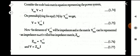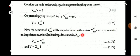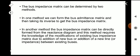We are already familiar with the bus admittance matrix. The equation is Y_bus × V = I. If we pre-multiply both sides by Y_bus inverse, we get V = Y_bus_inverse × I. The elements of Y_bus inverse are impedances, so Y_bus inverse is called the bus impedance matrix, denoted Z_bus. Thus Z_bus = Y_bus inverse, and we write V = Z_bus × I.